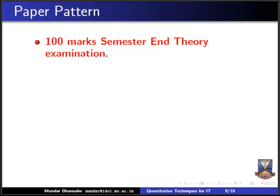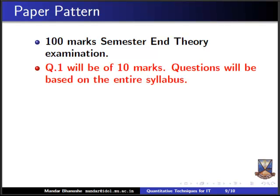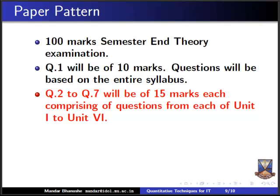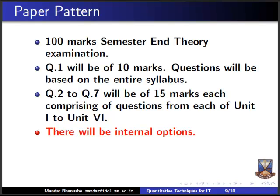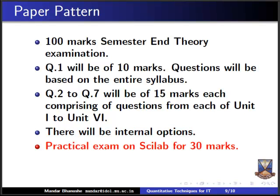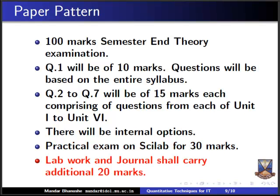At the end of the course we have an exam of 100 marks — a semester theory examination with seven questions. Question 1 is 10 marks covering the entire syllabus. Questions 2 through 7 are 15 marks each, covering units 1 to 6 respectively, with internal options in all questions. In addition, there is a practical exam on Scilab for 30 marks and lab work and journal carrying 20 marks, bringing the total to 150 marks for Paper 4 — Quantitative Techniques — in semester 4 of BSEIT.